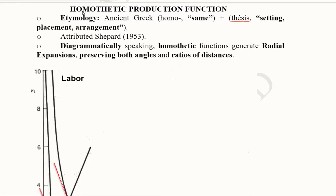Let us see how we can apply this kind of function to the production function in economics. The etymology of the word homothetic is explained here. It stems from ancient Greek: homo means 'same' and thesis means 'setting, placement, or arrangement.' So homothetic means same setting or same arrangement.